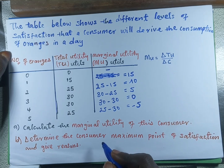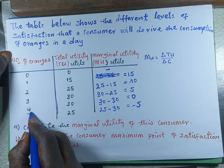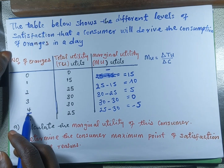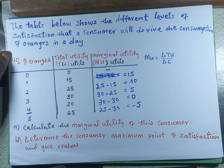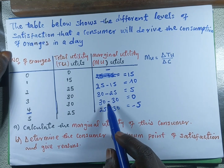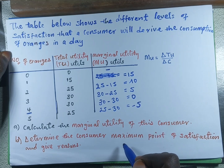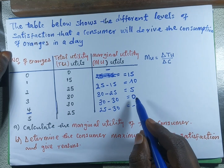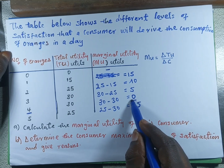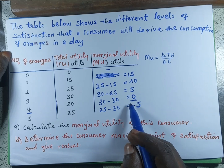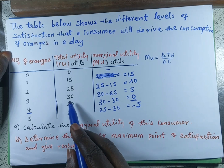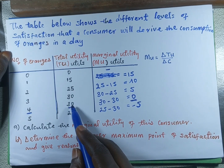The consumer's maximum point of satisfaction is at the fourth orange. After consuming the fourth orange, the consumer will derive maximum satisfaction. Utility is maximized where marginal utility is zero, and at the fourth unit, marginal utility is zero. So it is at this point that the consumer will derive maximum satisfaction. This point is also called satiety, and it occurs at the fourth unit with a total utility of 30.